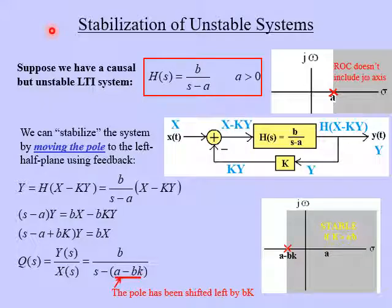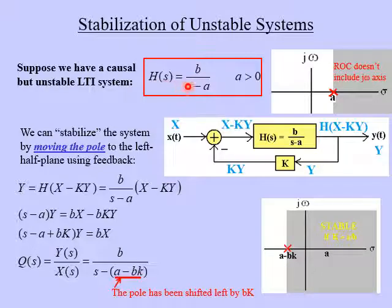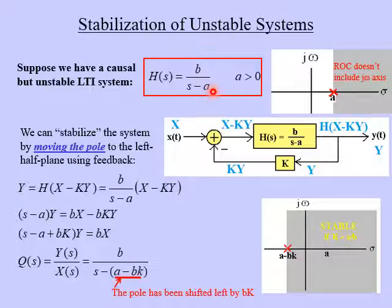So let's take a look at an example of how we can stabilize an unstable system by using feedback. Suppose we have a causal but unstable LTI system described by the transfer function H(s) equal to some constant B over S minus A, where A is assumed to be positive. So A is the pole of this transfer function, and since A is positive, it's going to be in the right half plane.